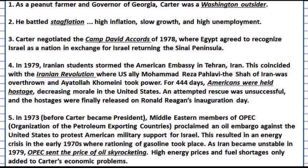Jimmy Carter became president in 1977, a Washington outsider and peanut farmer. There was a lot of stagflation in the economy — that's when you have low growth, high unemployment, and high inflation. In 1979, the price of oil skyrocketed after the Iranian Revolution, so Carter was also fighting an energy crisis. They thought about increasing nuclear power; however, the Three Mile Island power plant partially melted down, causing people to fear nuclear energy as well.